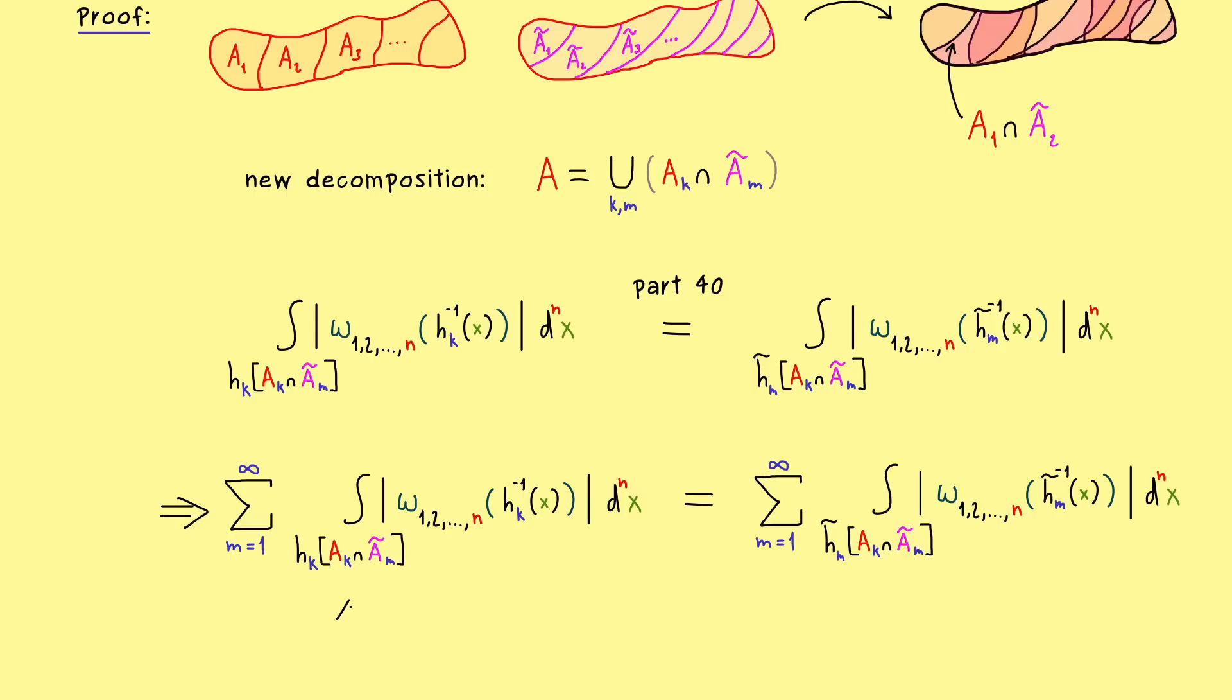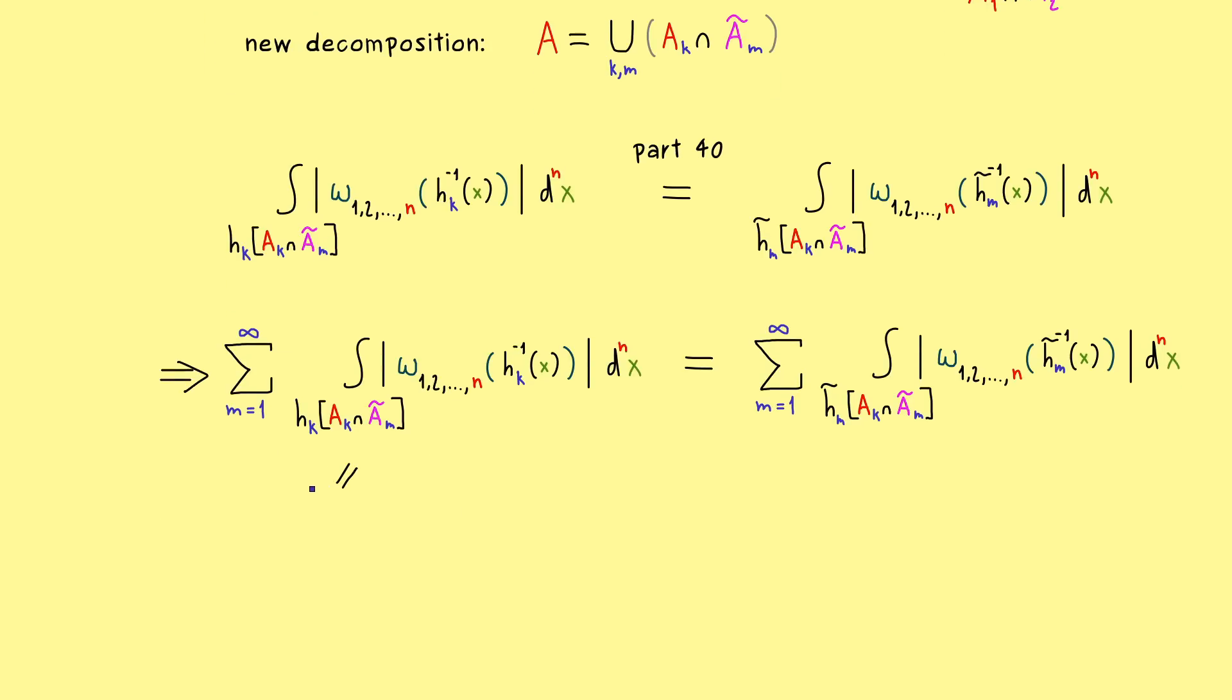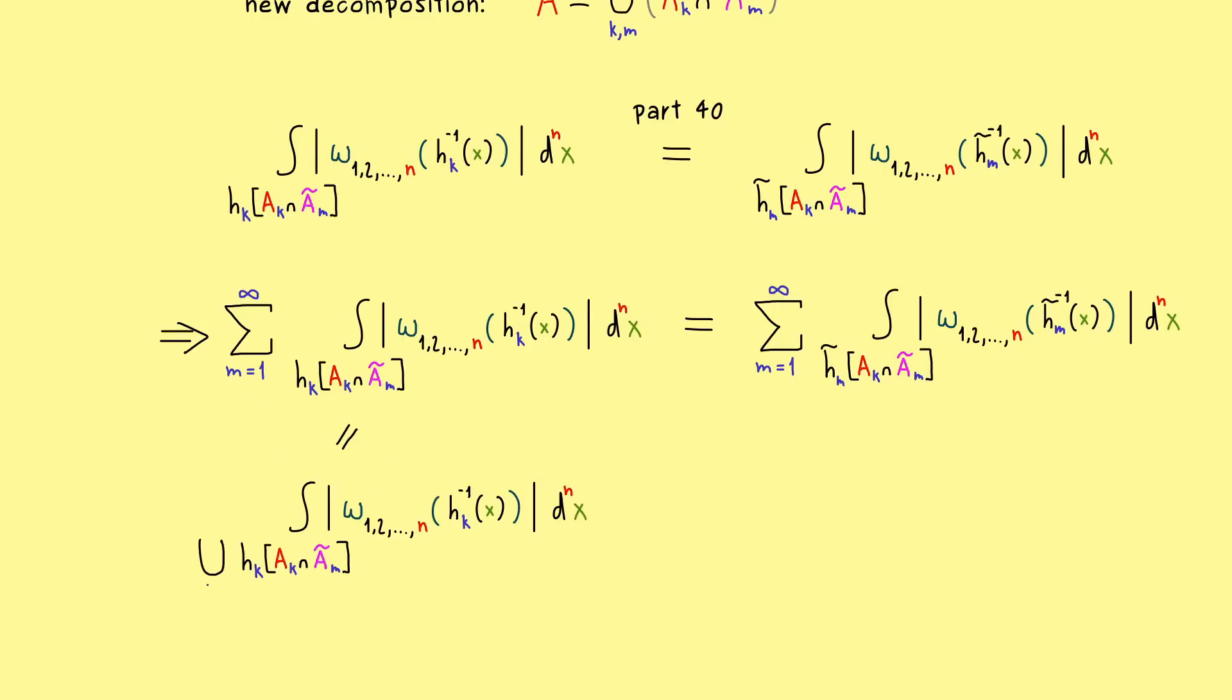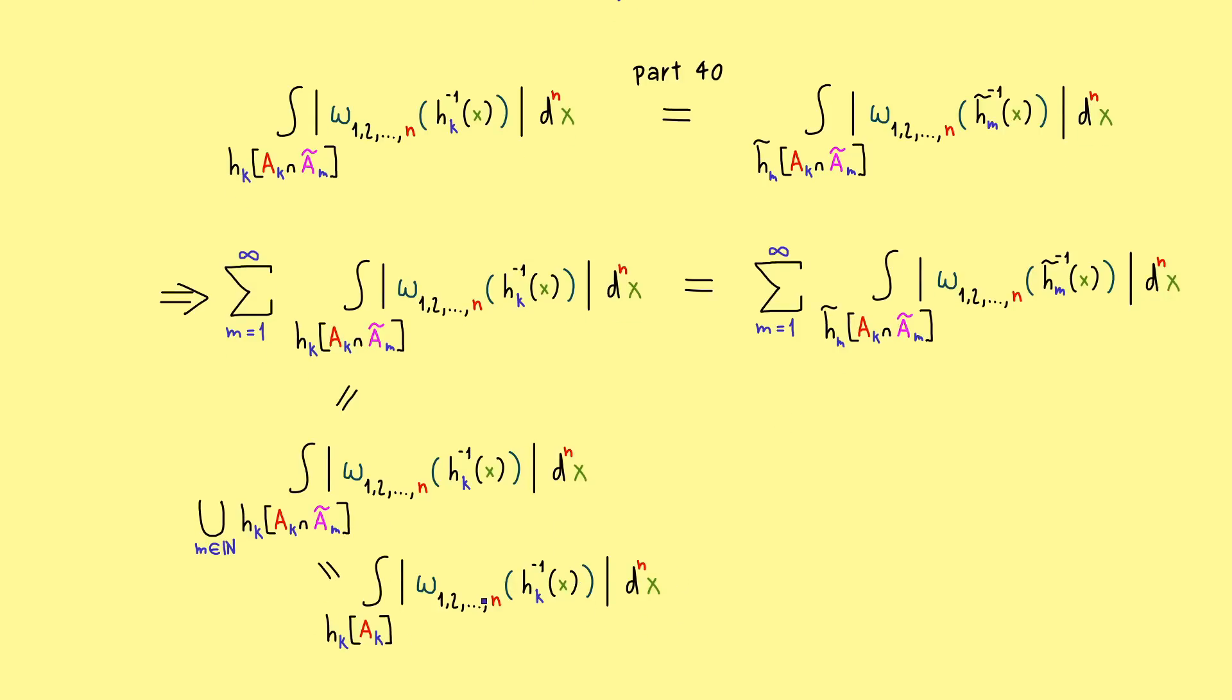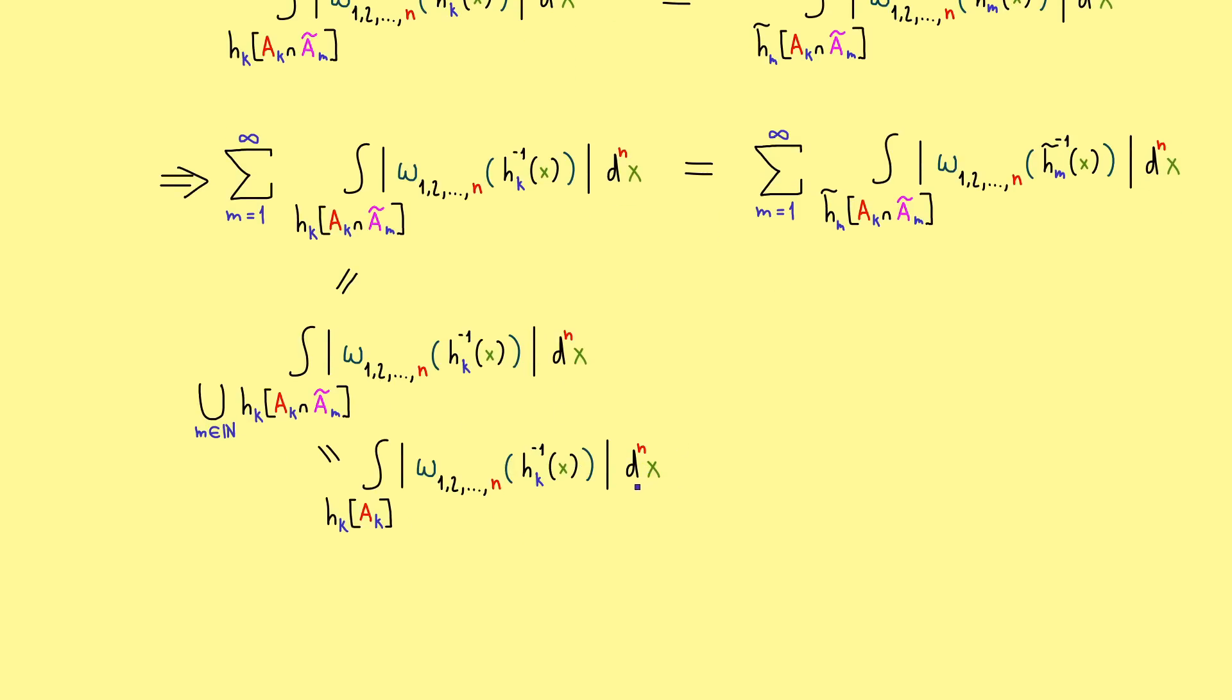Then we don't change so much, we still have the equality, but we can simplify the left hand side. Namely, we go through all possible intersections of the set Ak with the sets A tilde M. The conclusion is that instead of the sum, we can write a union at the integral. We have the union of the images where M goes through all possible values. And now it's not hard to see that this is actually the whole image of Ak. And there we have it. The left hand side is an integral we already know, and we know it's finite.